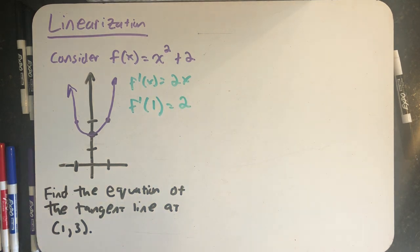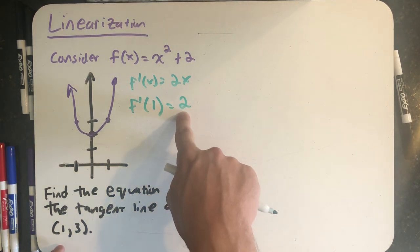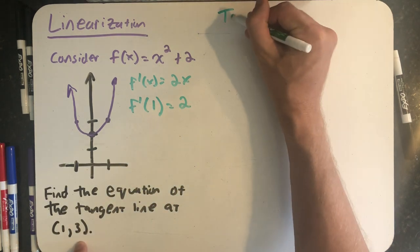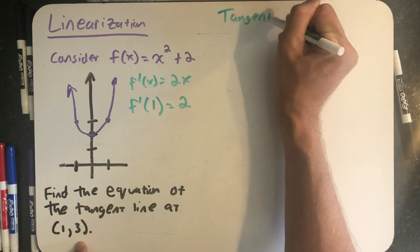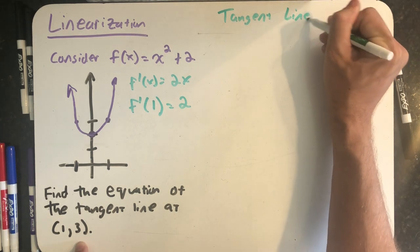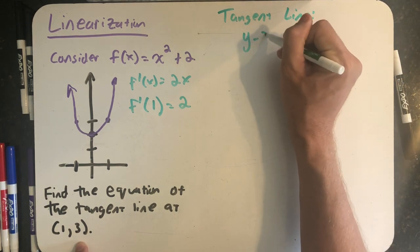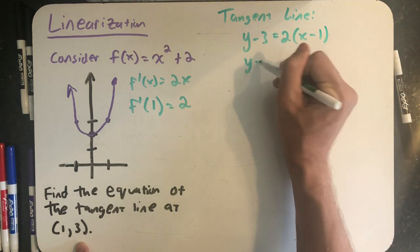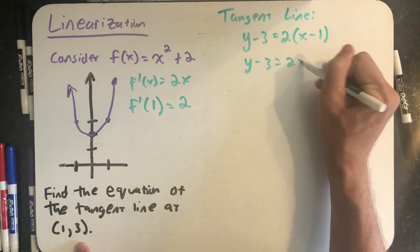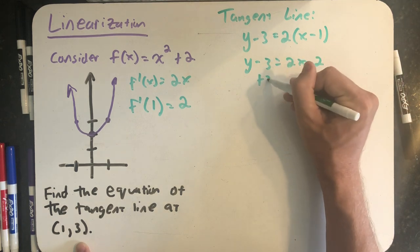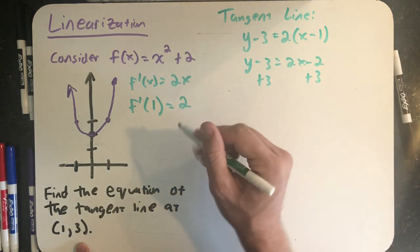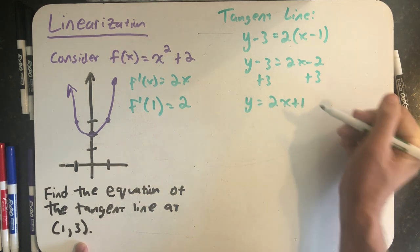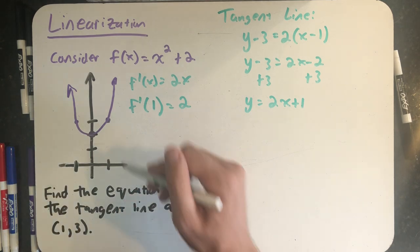So I'm looking for the equation of a line with a slope of 2 that passes through the point 1 comma 3. So let's see my tangent line. I can just use point slope, and here's my tangent line: y equals 2x plus 1.